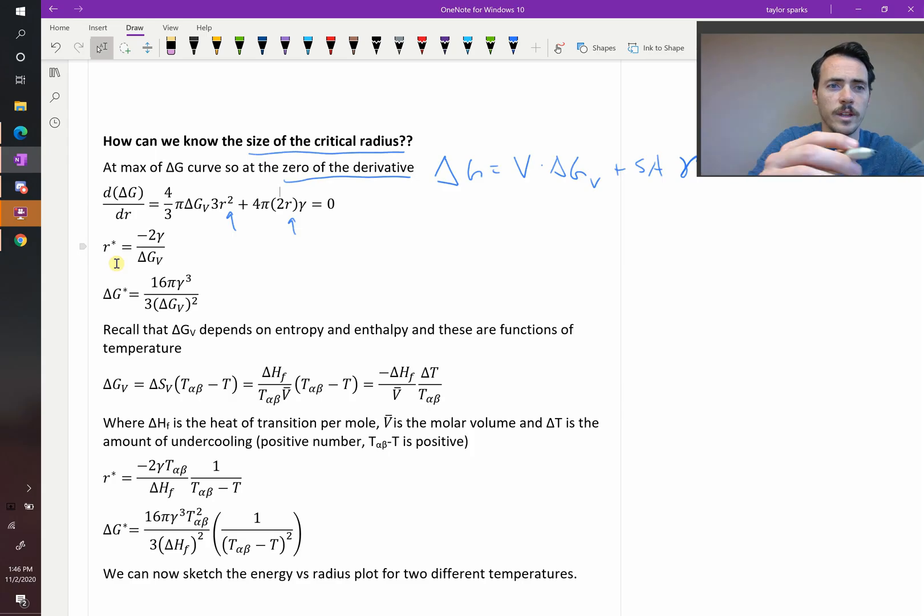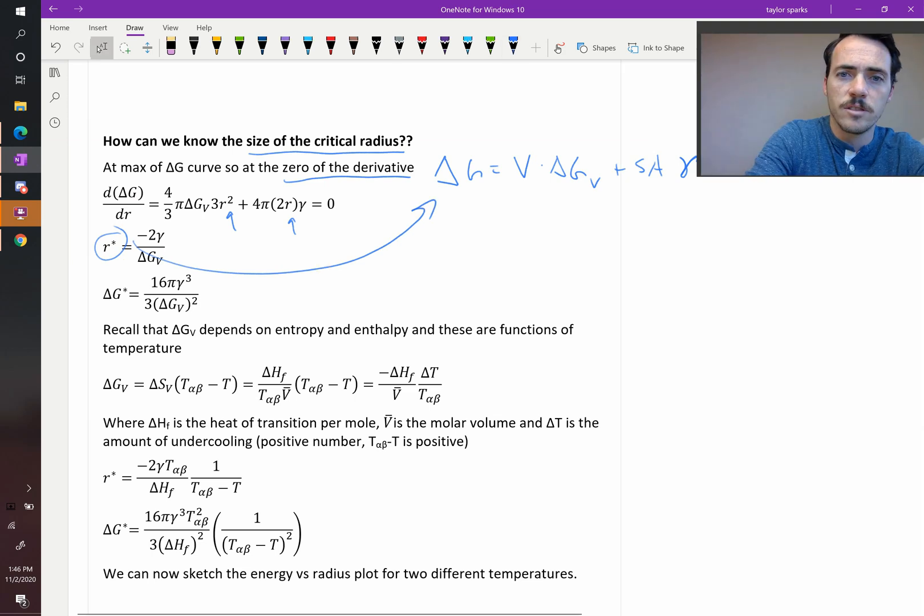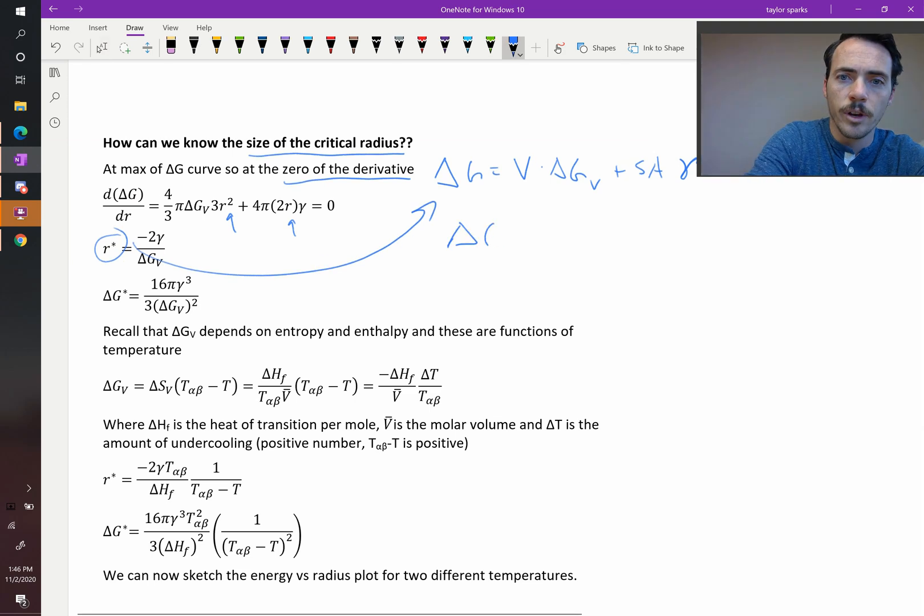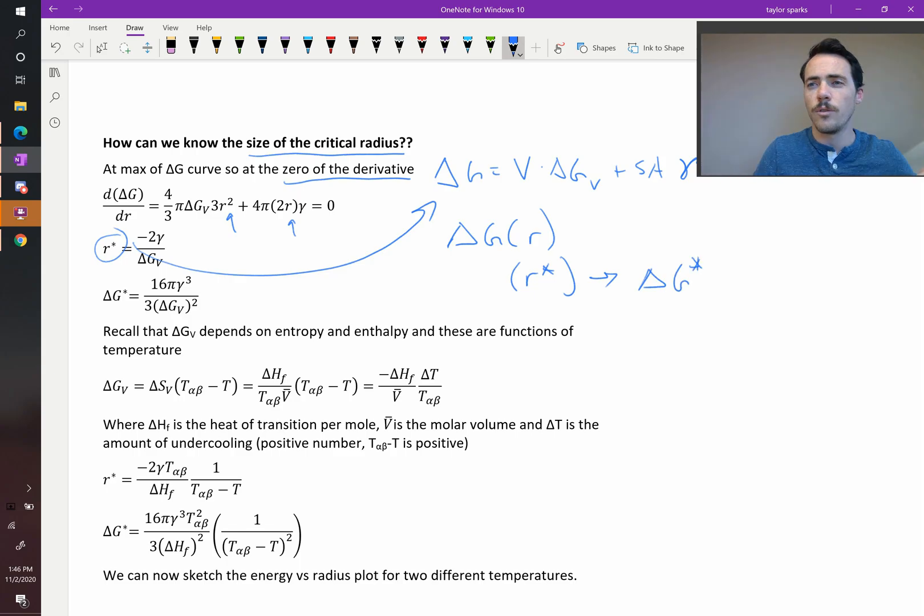Likewise, we could then take this R star value, we could plug it into our initial expression for delta G, and since delta G, our change in the Gibbs free energy, is a function of R, if we plug in R star, then what we get is the activation energy for homogeneous nucleation. When I do that I find that it's 16 pi gamma cubed divided by three times the quantity of delta G_V squared.